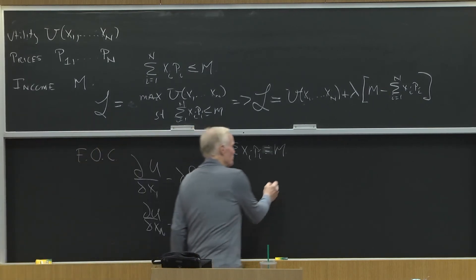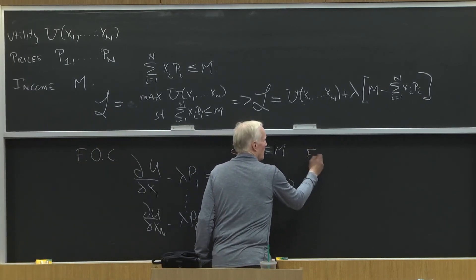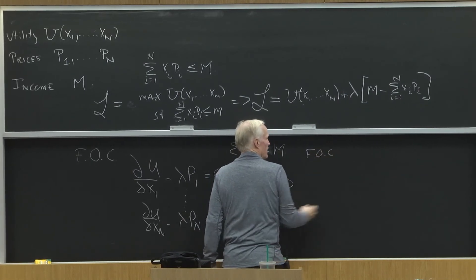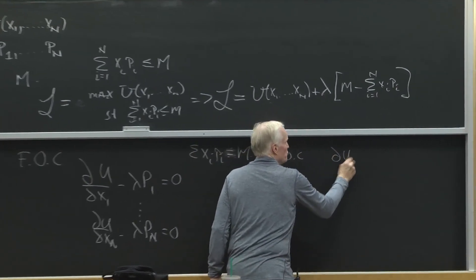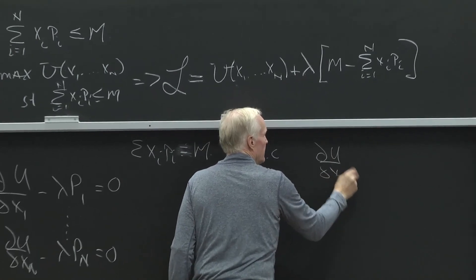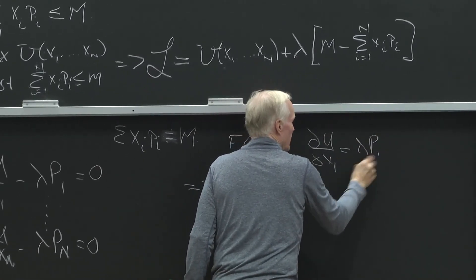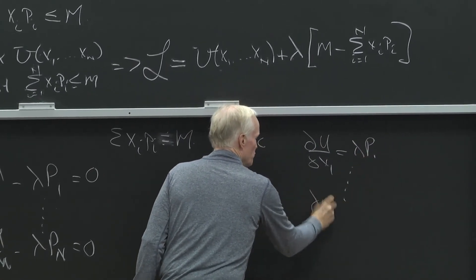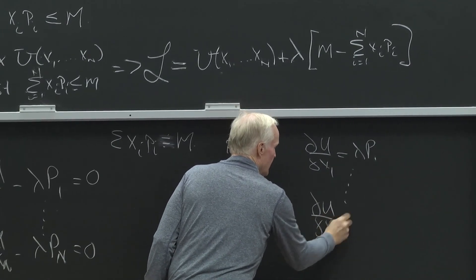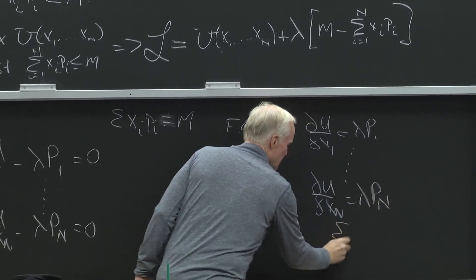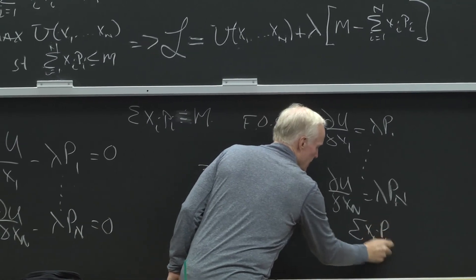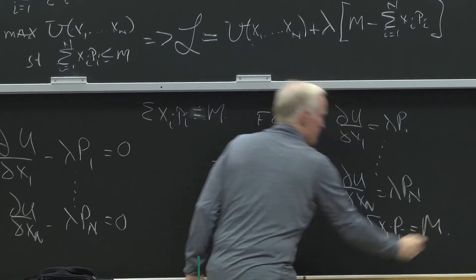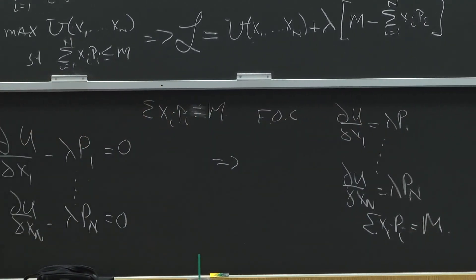We can then rewrite these first-order conditions as partial u partial x1 equals lambda p1 down to partial u partial xn equals lambda pn, and the sum of the xi pi equals m. So those are our first-order conditions.